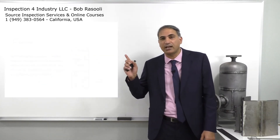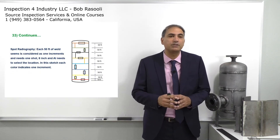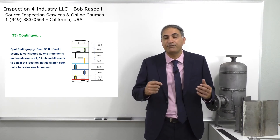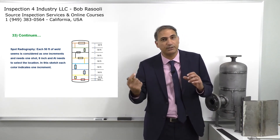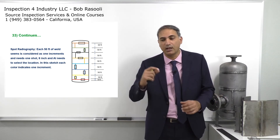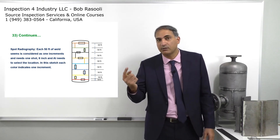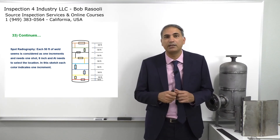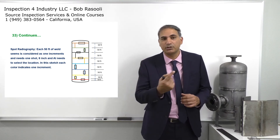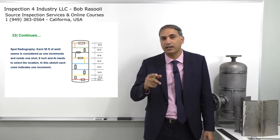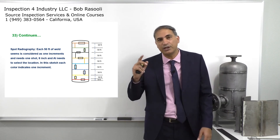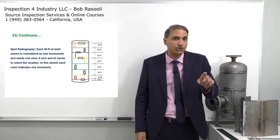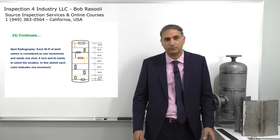Look at the sketch on screen. Going from bottom to top, the bottom head to shell joint shown in red is 50 feet — measure the perimeter of that weld with a tape measure or from the drawing, and if it equals 50 feet, that is one increment and you take one shot. The vertical or longitudinal joint shown in yellow, together with one circumferential joint, totals 50 feet as one increment. For each 50 feet you take one shot, and that shot location should be selected by the authorized inspector, though the AI may authorize the manufacturer to select it.